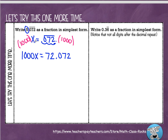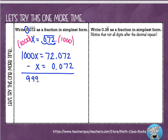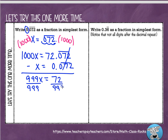The next step is I'm going to subtract out this original equation. I'm going to write it underneath and line up my decimals. That's going to give me 999x equals — this repeating part is going to cancel out, so I'm just left with 72. And that's exactly what we wanted — we want that repeating decimal to go away. I'm going to divide each side by 999, and that's going to leave me with x equals 72 over 999.